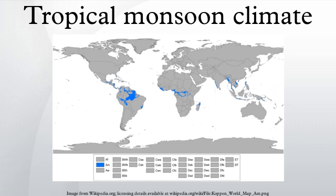During the high sun season, the intertropical convergence zone induces rain. During the low sun season, the subtropical high creates dry conditions. The monsoon climates of Africa, and the Americas for that matter, are typically located along trade wind coasts.